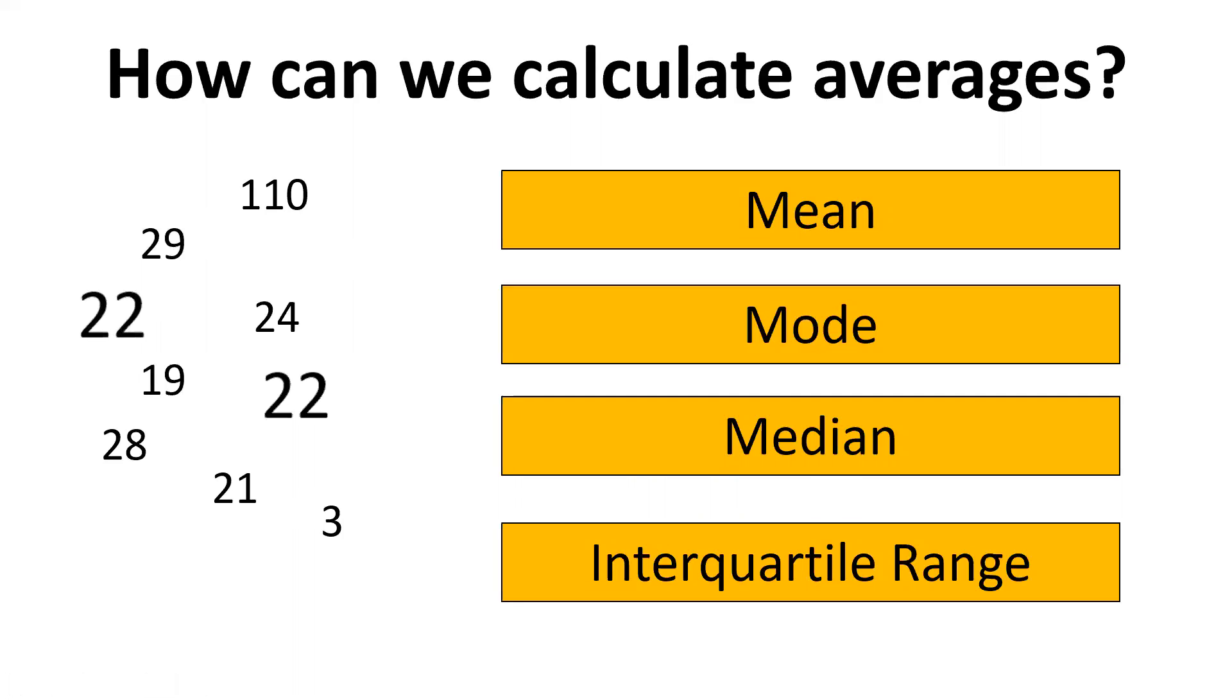If you want to work out the mode, the mode is the most common number. So here we've got 110, 29, 24, 19. There's only one of these numbers here but there are two 22s. Therefore it is the most common number and that would be your mode.